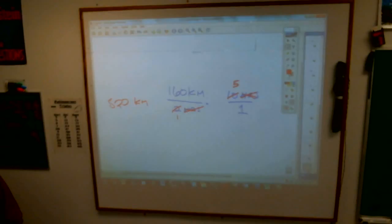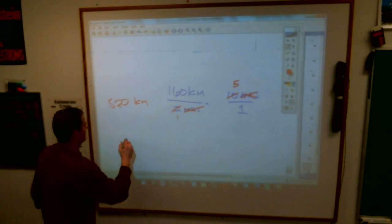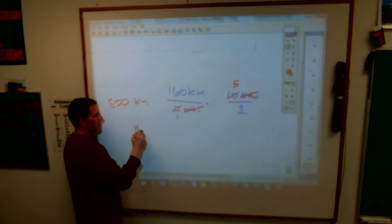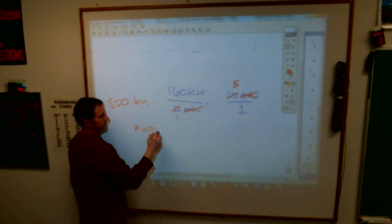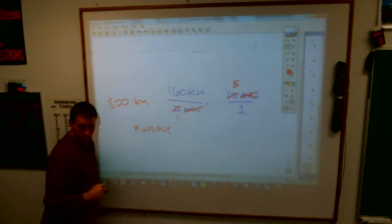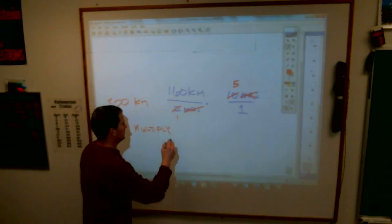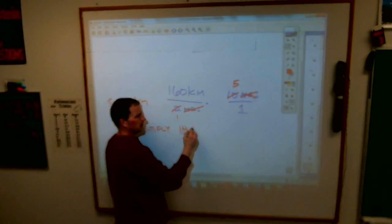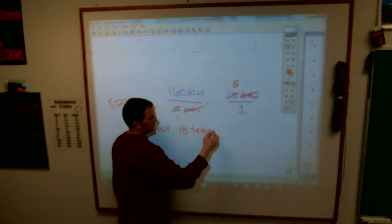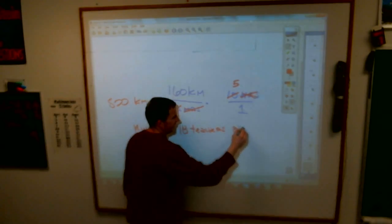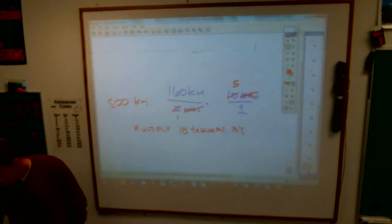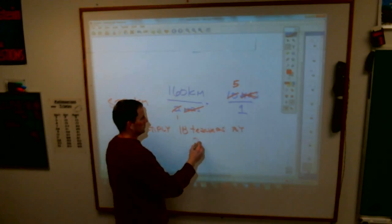Oh, here's one right out of the book. Multiply 18 teachers by 29 students per teacher. This is right out of the book. Write this problem down. Now, multiply 18 teachers by 29 students per teacher.